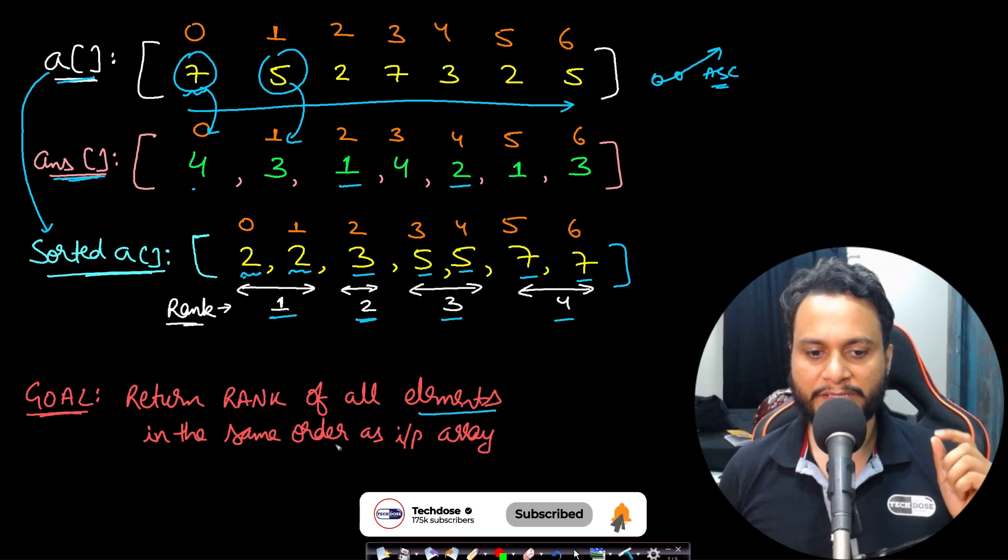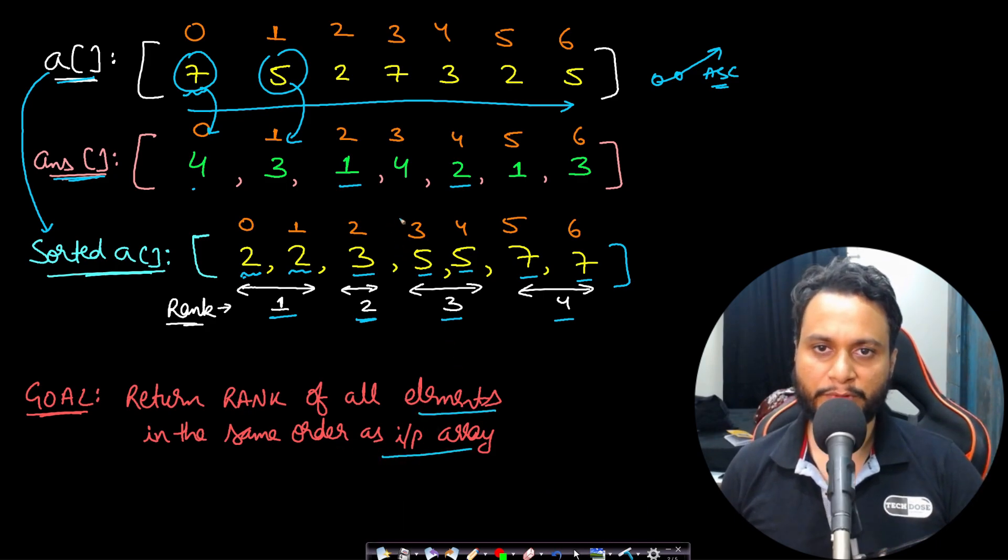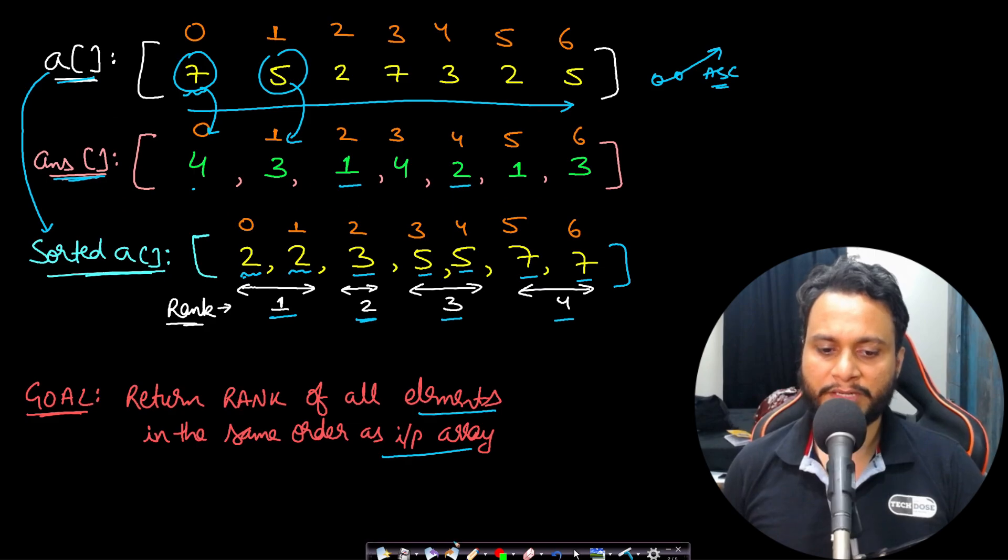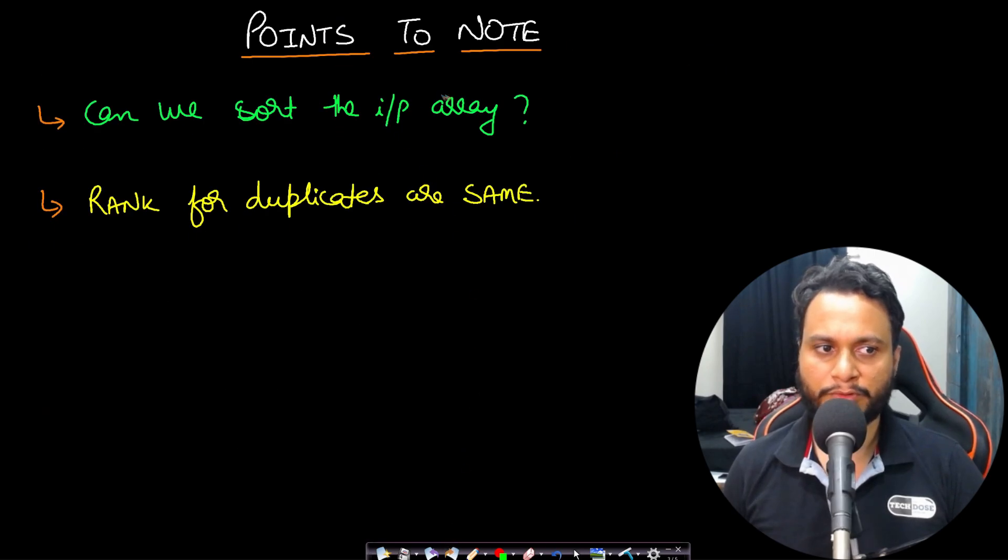We need to return the rank of all the elements in the same order as the input array. So I hope this problem statement is crystal clear. Now let's look at some pointers before we move on to the solution.